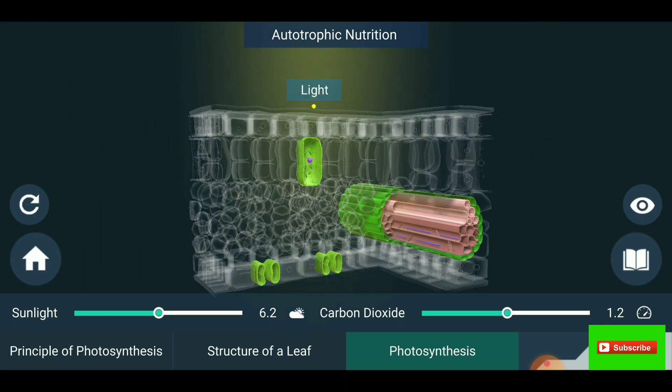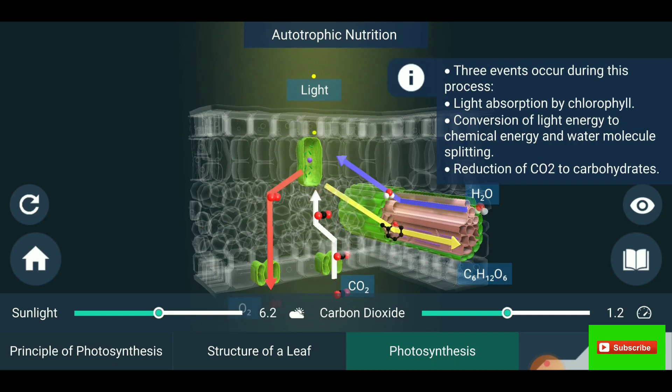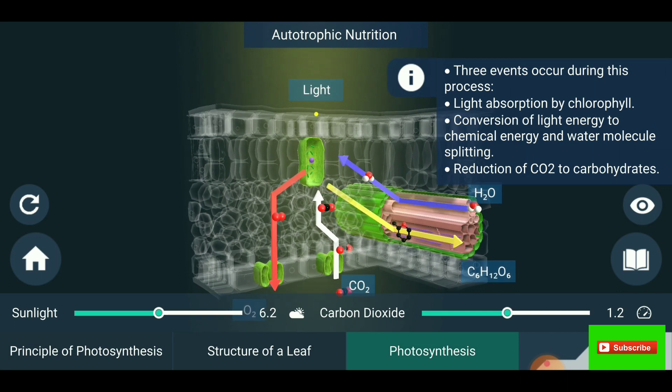Photosynthesis - autotrophic nutrition with the help of light. You are seeing the carbon dioxide is taken and glucose is produced with the help of water.